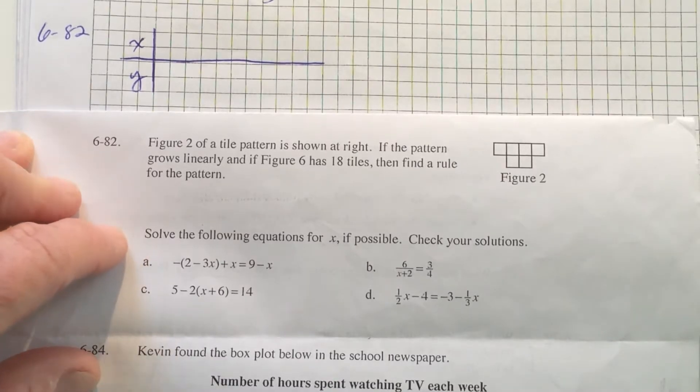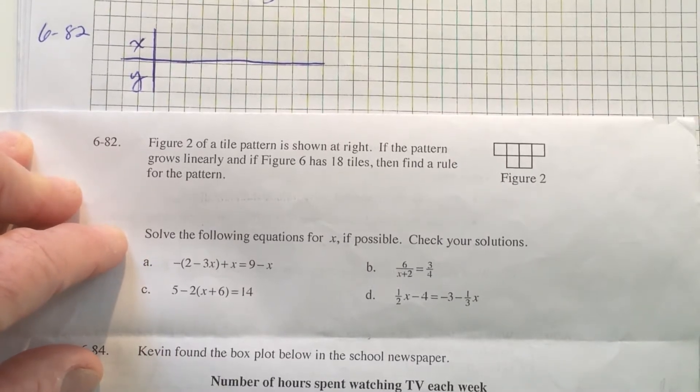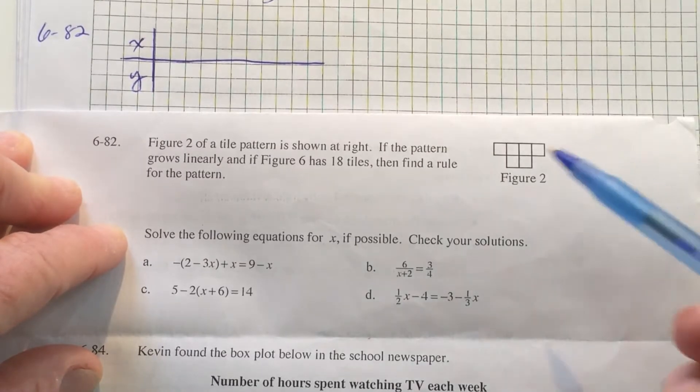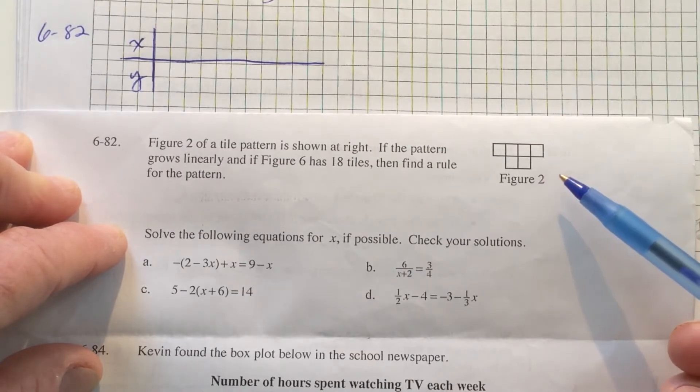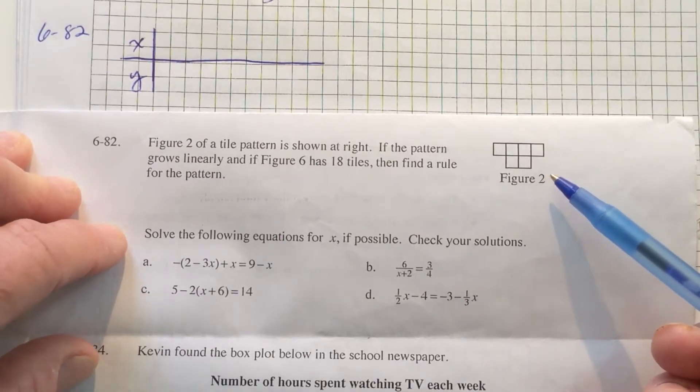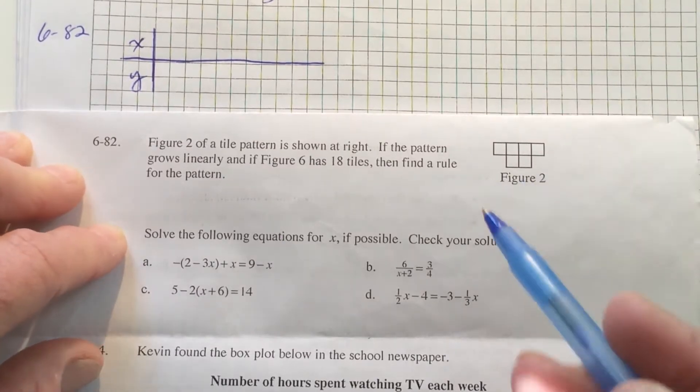6-82. Figure 2 of a tile pattern is shown at right. If the pattern grows linearly, meaning in a straight line with constant growth, and if figure 6 has 18 tiles, then find a rule for the pattern.